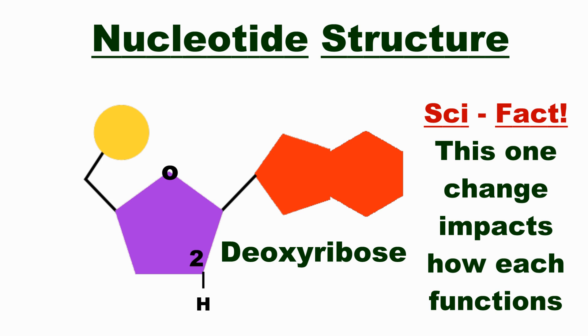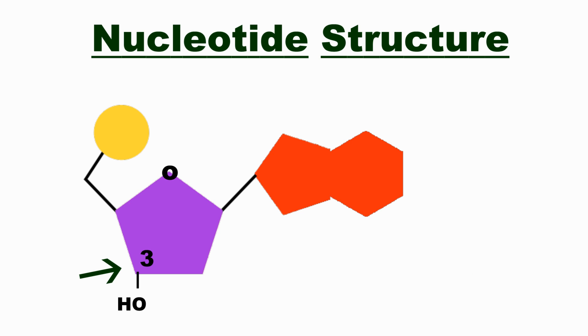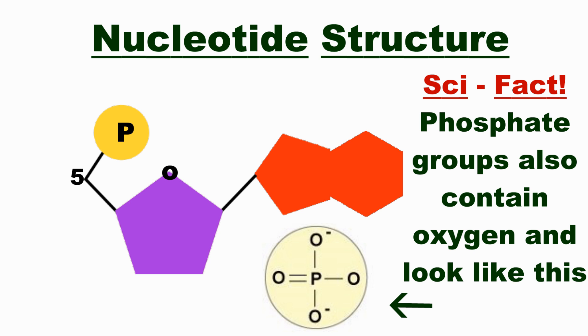But both types will contain a hydroxyl group bound to the three prime carbon, as well as a phosphate group bound to the five prime carbon, located outside the ring structure. This phosphate group is the second required component necessary to make a nucleotide.